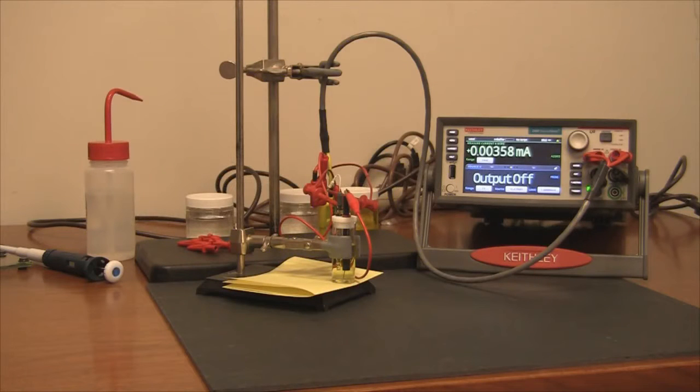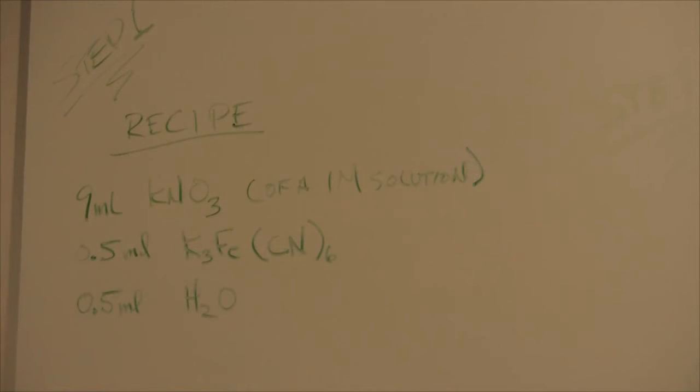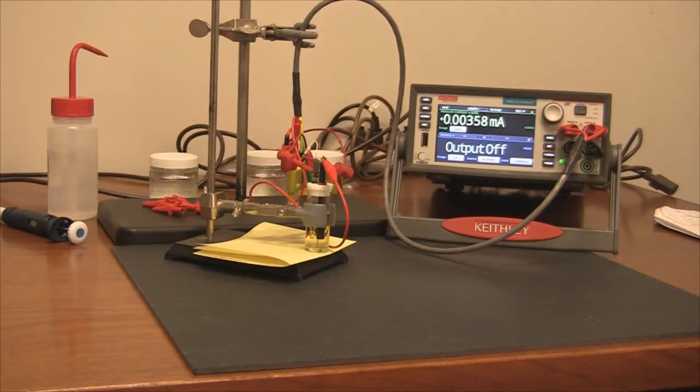Hi, in this video I'd like to show you just how easy it is to run a cyclic voltammogram with the model 2450-EC. Today we're going to run a cyclic voltammogram on potassium ferricyanide using potassium nitrate as a supporting electrolyte. The recipe is shown. So here we go, let's see how easy this is.